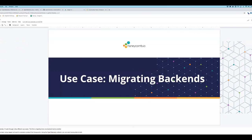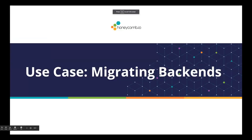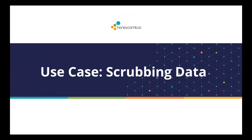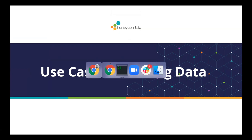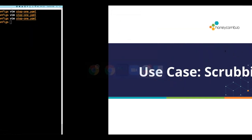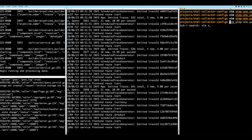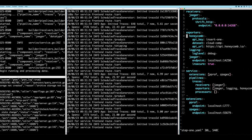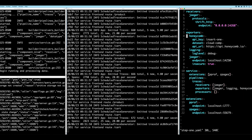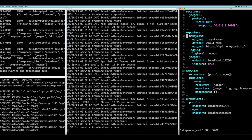So that was step one — migrating backends. Now let's talk about scrubbing data. Now that I have data going through the collector, I can start using processors. Processors allow you to mutate span data in flight, and this is really valuable. Let's go back to our config and add something to our pipeline — specifically a processor.